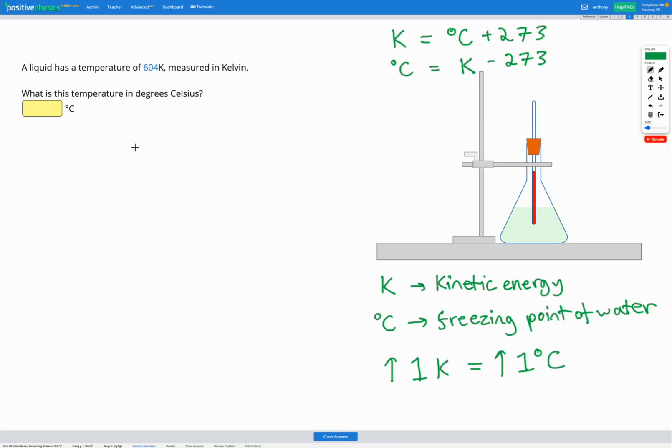So if we have 604 Kelvin, we know that subtracting 273 is going to get us our answer in degrees C. So if we do 604 minus 273, that's going to get us 331, and that's going to be our answer in degrees C.